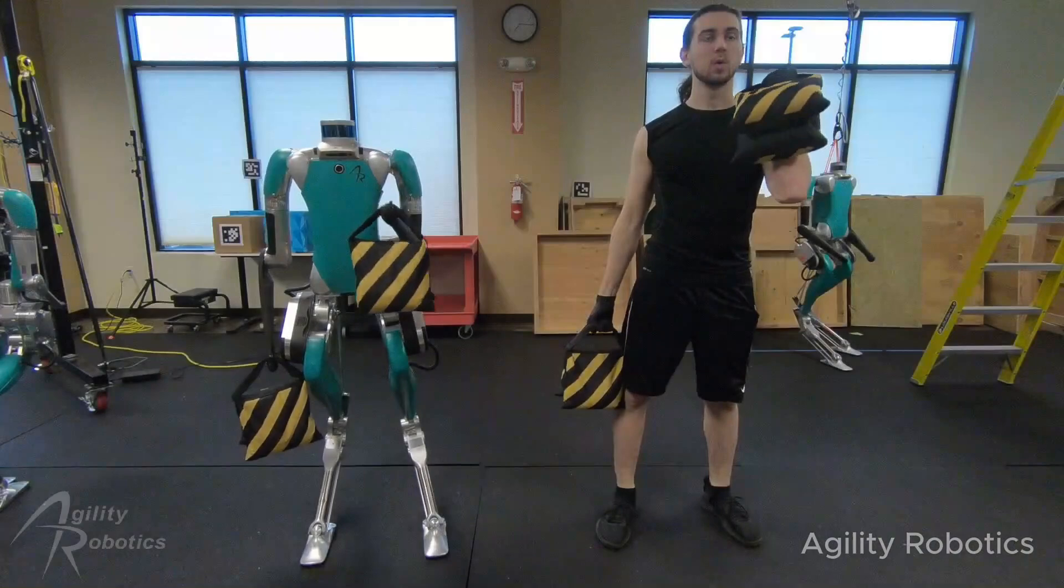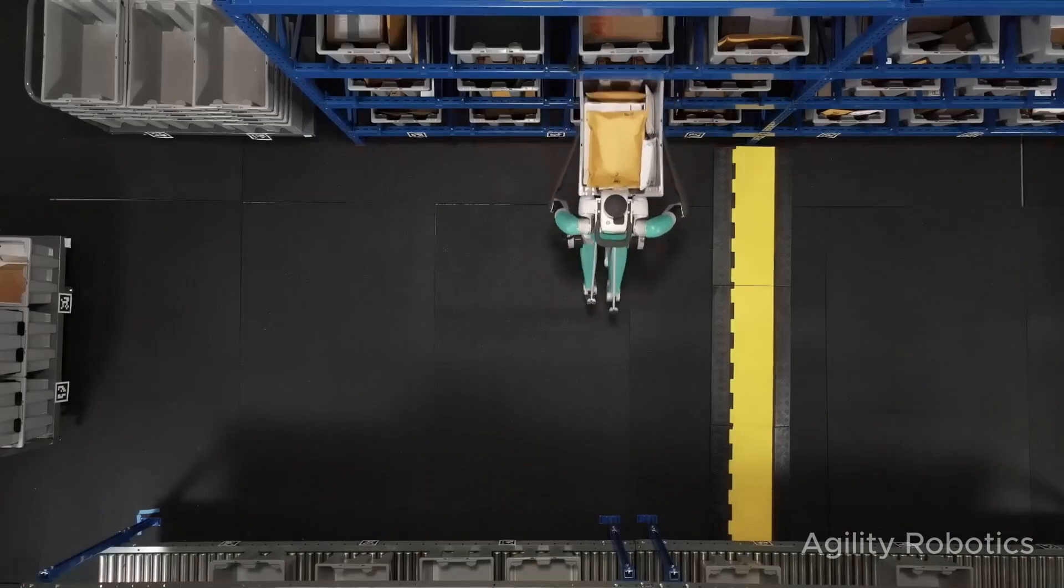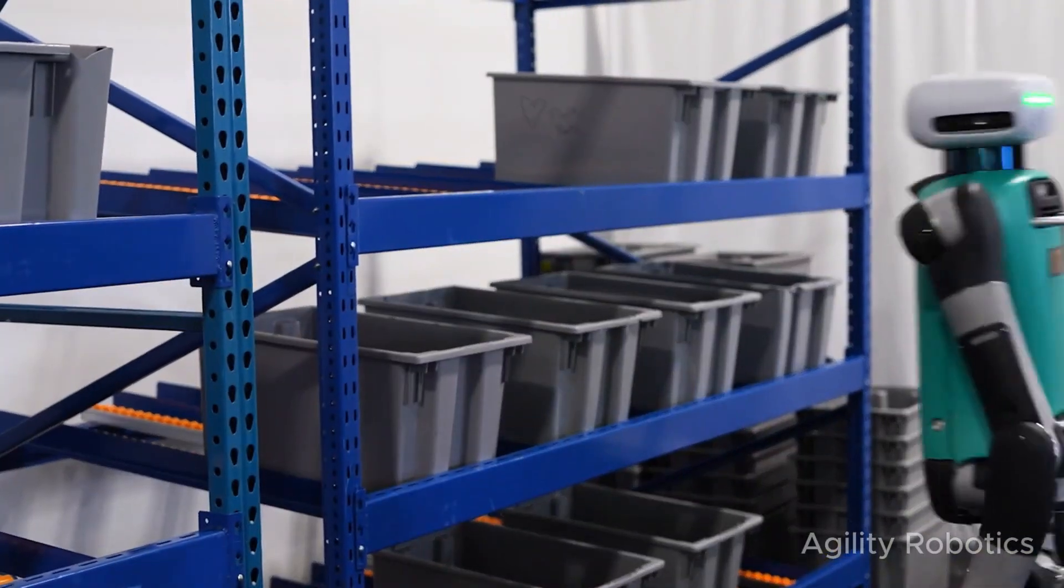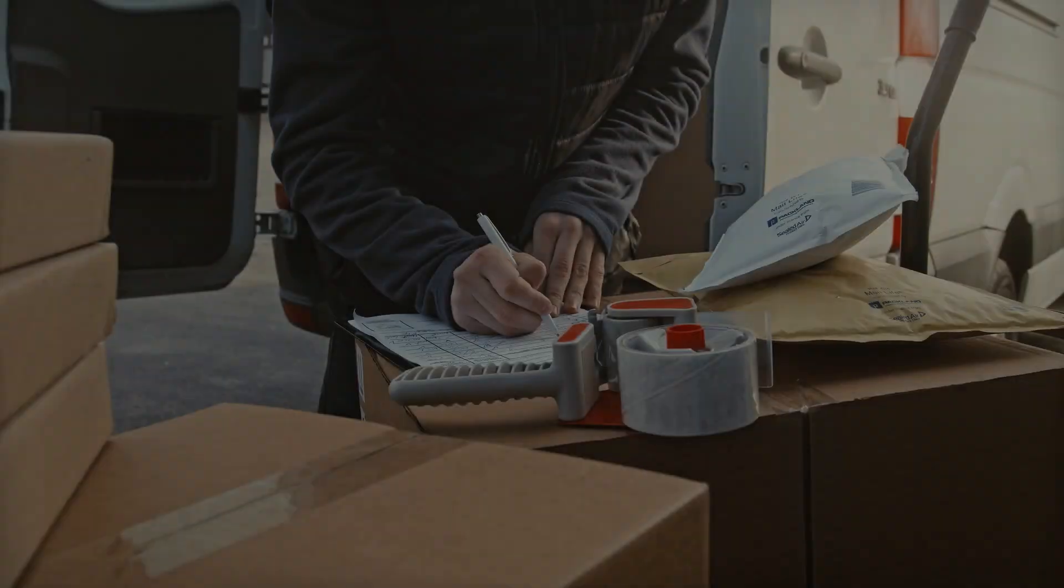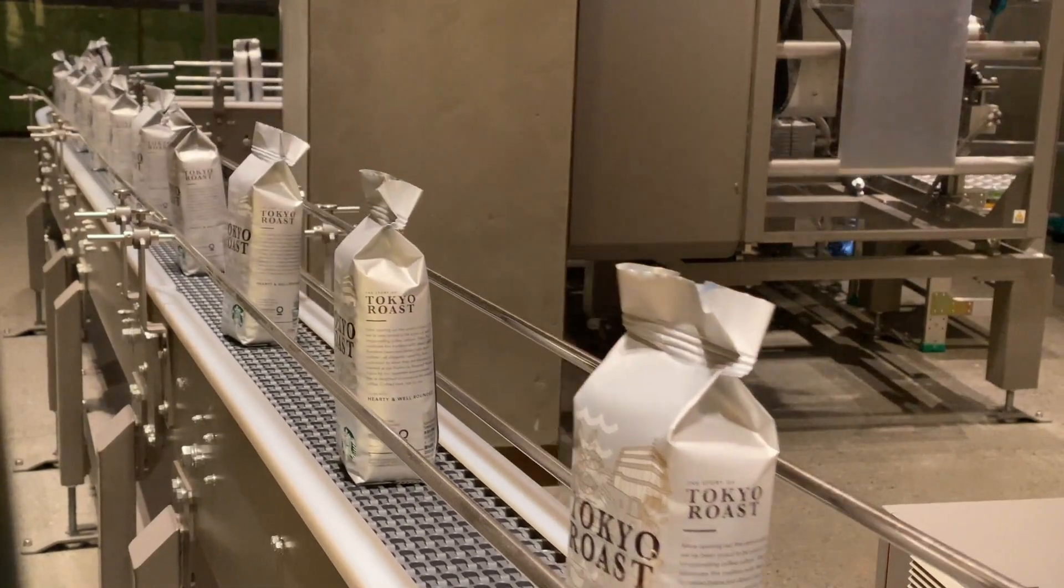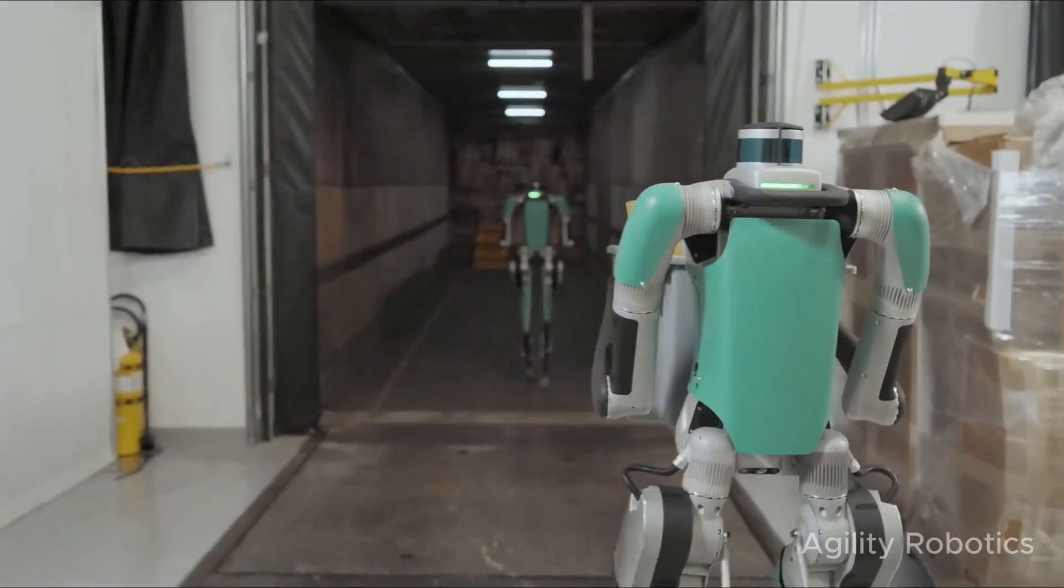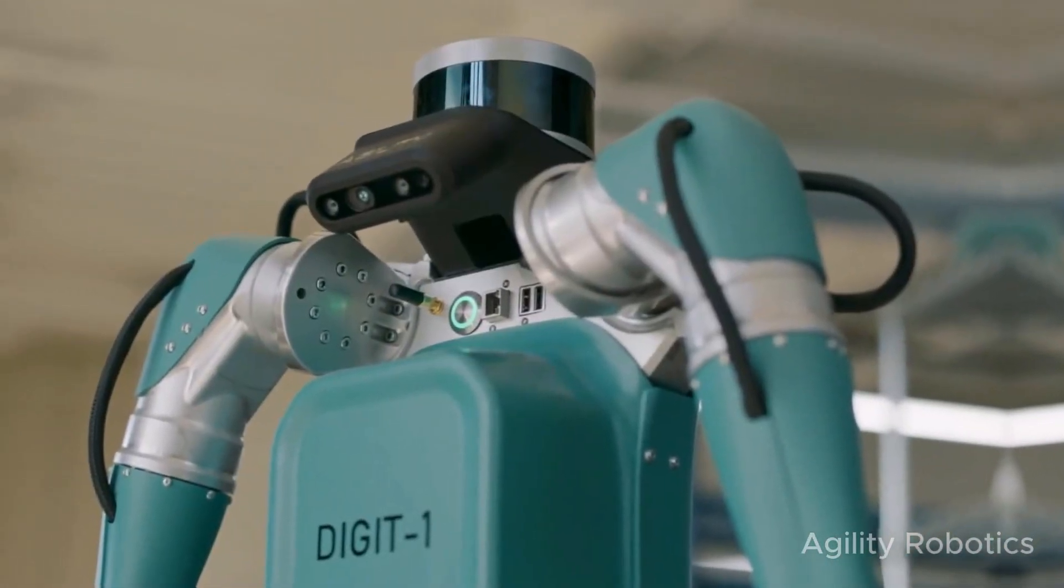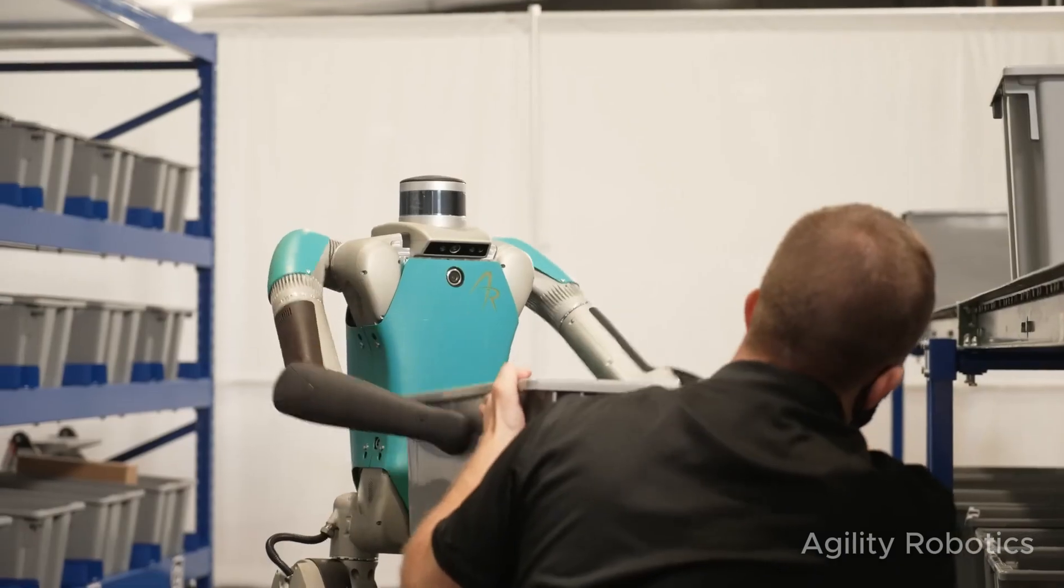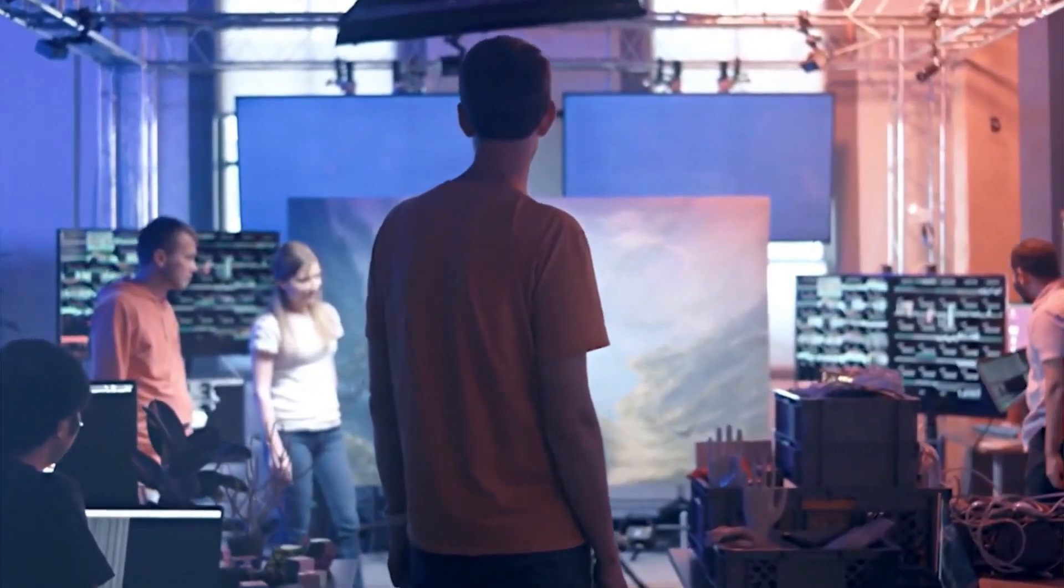It can autonomously navigate unstructured spaces and manipulate objects with its arms. Despite its promising capabilities, the rise of robots like Digit raises concerns. As robots take over repetitive tasks, the impact on human jobs in sectors like logistics may be worrisome. Factors such as high turnover, burnout and workplace injuries are pushing the need for automation. While Digit's ability to assist human workers is evident, it also poses the question of how the job market will evolve as automation increasingly occupies tasks once done by people. And therein lies the reason why this is a cause for worry for this AI system.